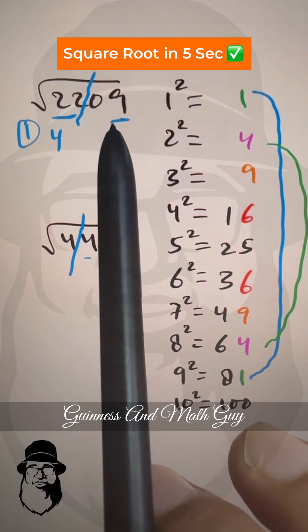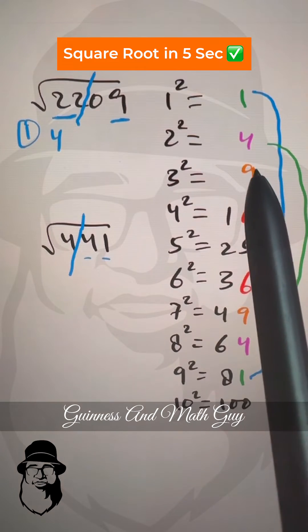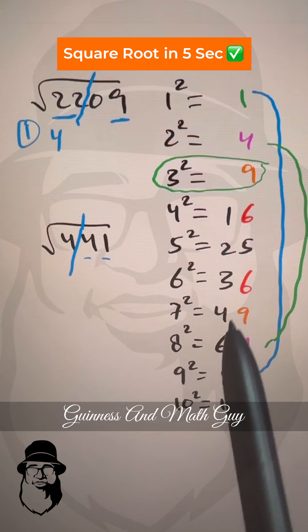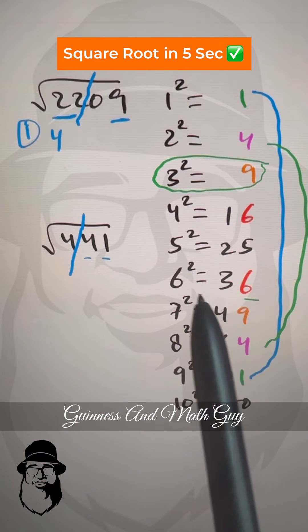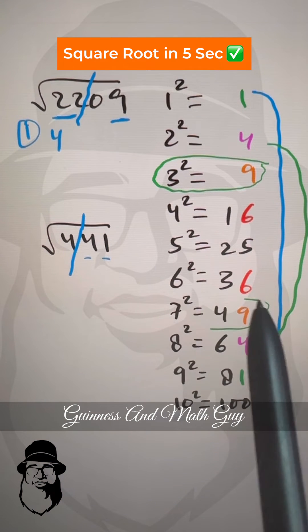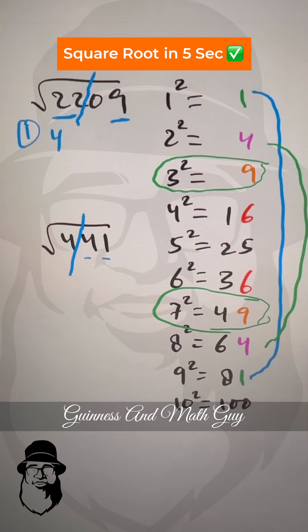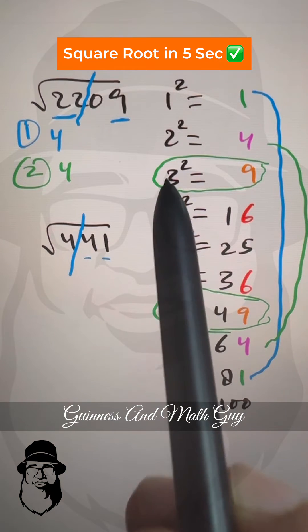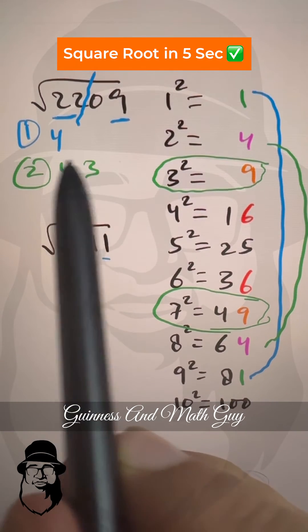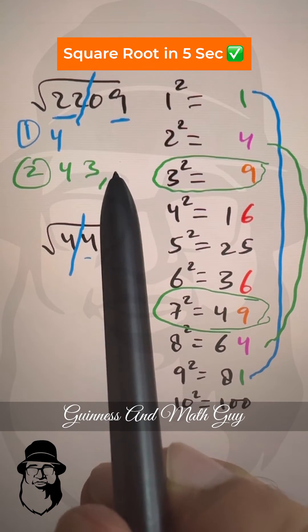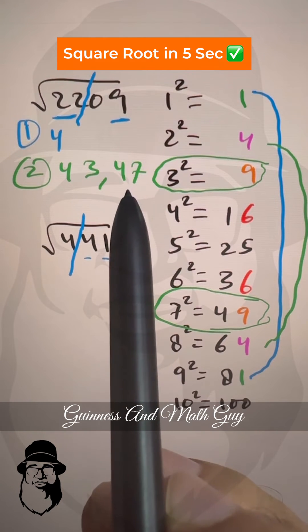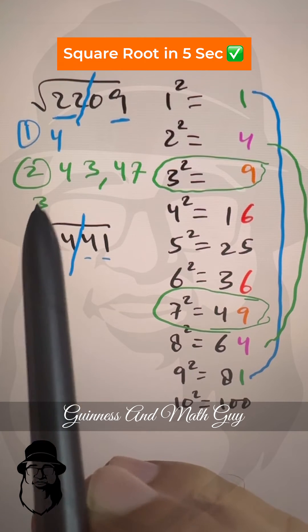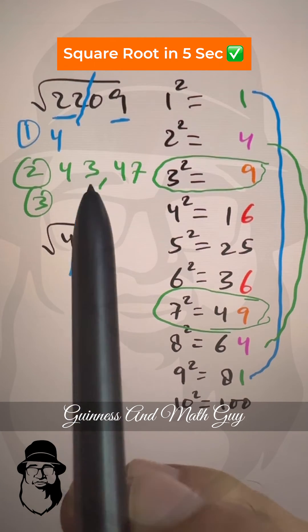Our perfect square is ending in 9. It means the square root of that number must end in 3 or 7. The answer must be, the second part of the answer must be 3 or 7. So we are down to 43 or 47. The last part is to decide if it is 43 or 47.